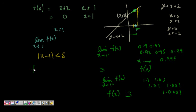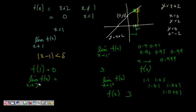Even though f(1) = 0, when we approach 1 from the positive side or the negative side, f(x) is becoming equal to 3. Hence we say that the limit of f(x) as x tends to 1 is equal to 3, even though f(1) = 0. The limit captures the expected value f(x) is tending to as x approaches a point.